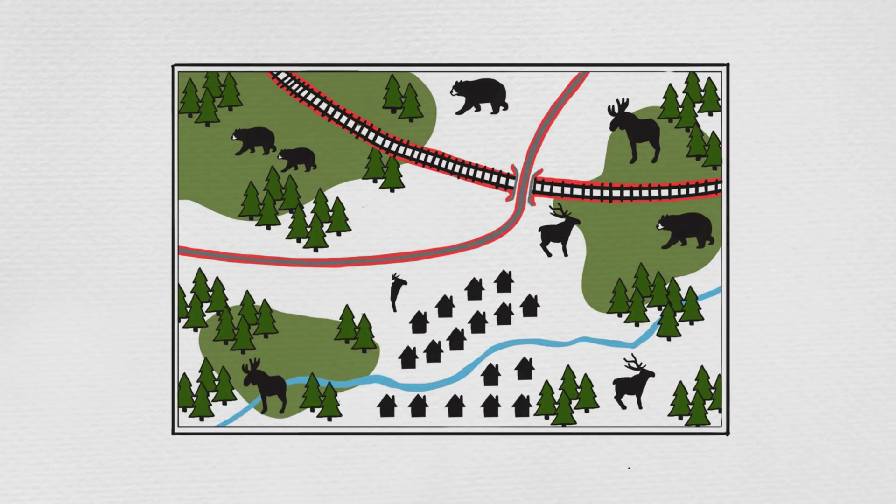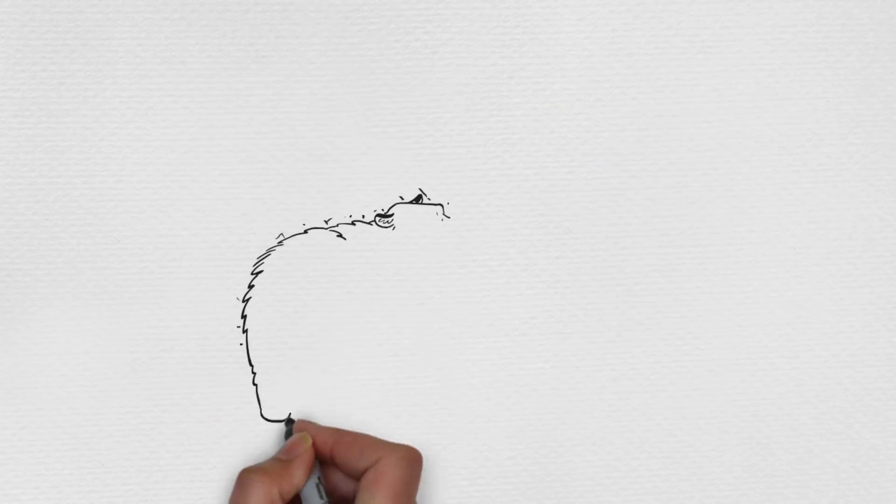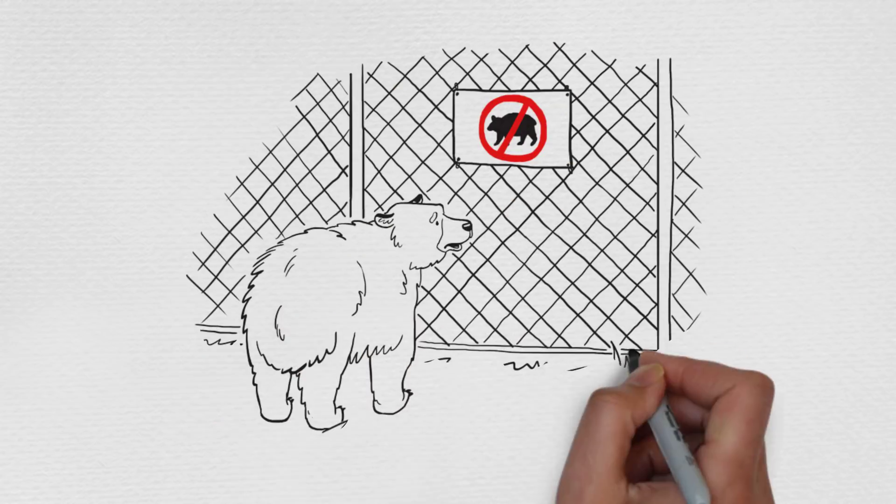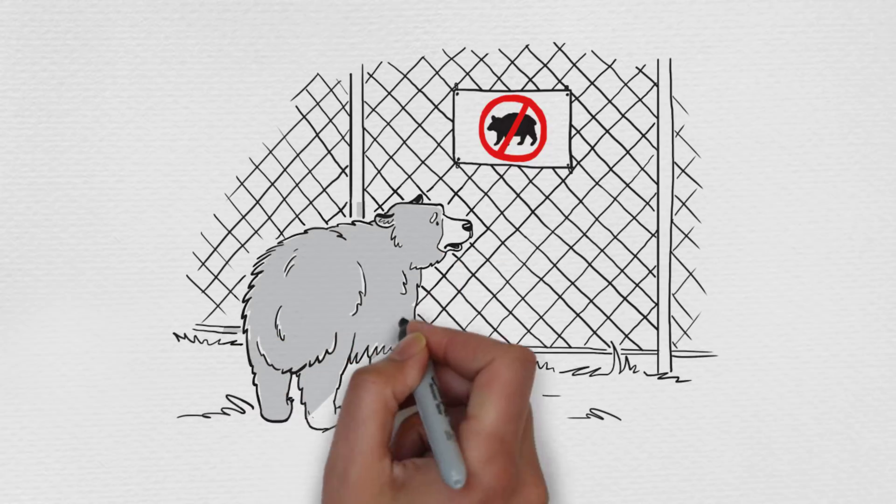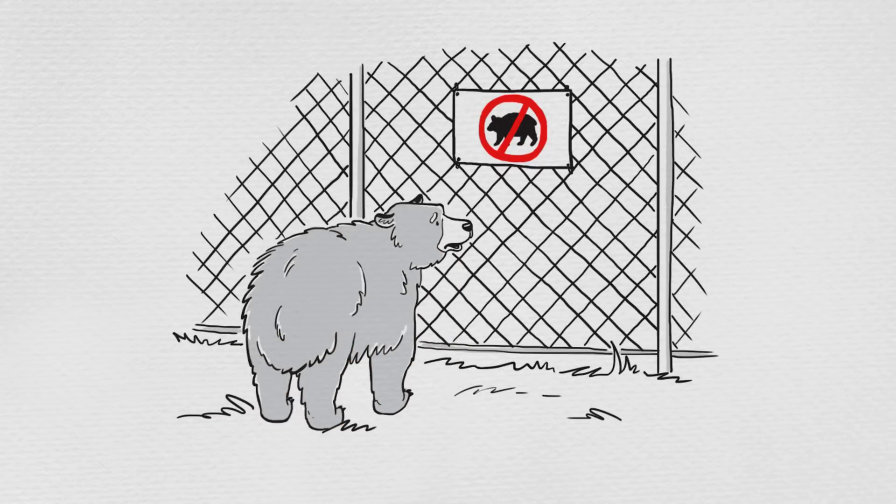While vital for conservation, parks and other protected areas aren't big enough to sustain wildlife and healthy ecosystems. With habitat loss and climate change, animals are increasingly limited in their movements.